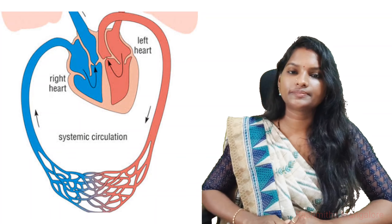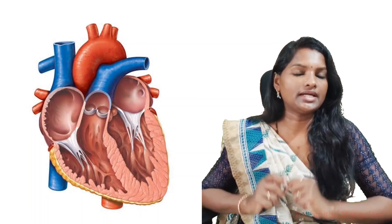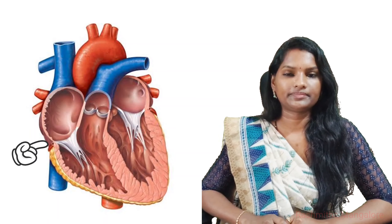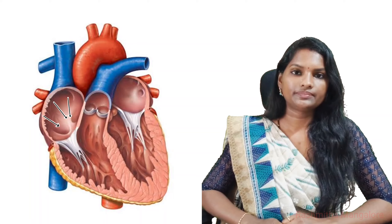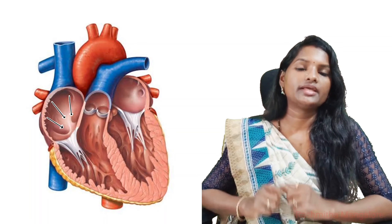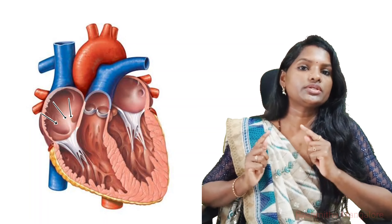As studied in previous sessions, the human heart contains four chambers: two atria and two ventricles. Starting from the right side of the heart, the right atrium receives deoxygenated blood from two large veins called the superior vena cava and the inferior vena cava. Once the atria contract, this deoxygenated blood is pumped down into the right ventricle.